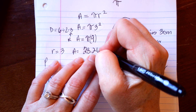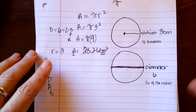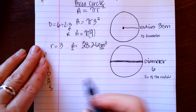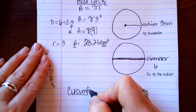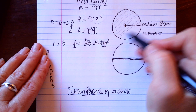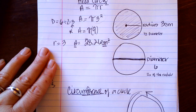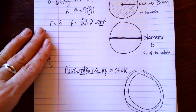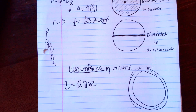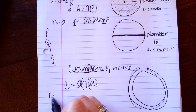If this was measured in centimeters, you write centimeters squared — remember, area is always units squared. That is how you find the area of a circle. Sometimes they also want you to find the circumference. The area is the inside of the circle; the circumference is the distance around the circle. The formula for circumference is C equals 2 pi r.